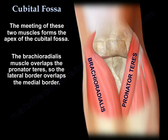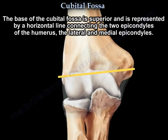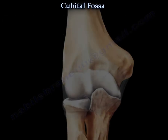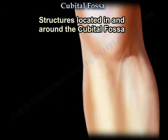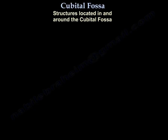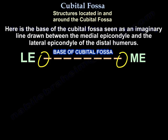The brachioradialis overlaps the pronator teres, so the lateral border overlaps the medial border. The base is superior and is represented by a horizontal line connecting the two epicondyles of the humerus — the lateral and the medial epicondyle. Here is the base of the cubital fossa, seen as an imaginary line drawn between the medial epicondyle and the lateral epicondyle of the distal humerus.